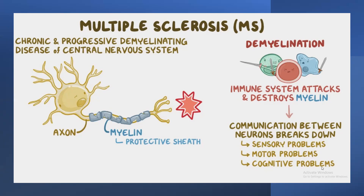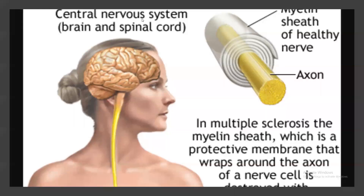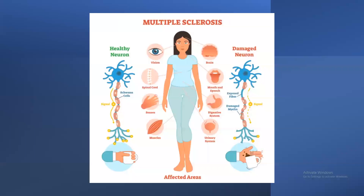As a result of this demyelination, sensory problems, motor problems, and cognitive problems occur. Multiple sclerosis affects the brain and spinal cord. The damaged neuron causes signals to not travel properly, affecting the eyes and vision, spinal cord, senses, muscles, brain, mouth and speech, digestive system, and urinary system.